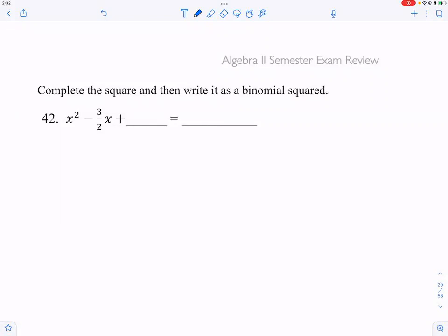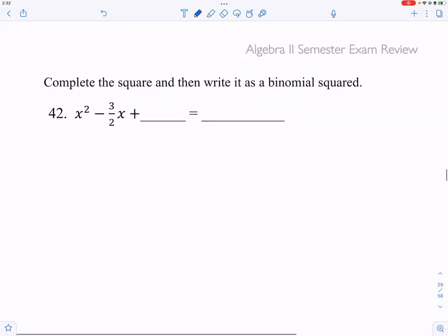Okay, for question 42, this is a more challenging question than question 41 because now you have a fraction in the middle term and we're asking the same question: what should we add over here so that we have a perfect square?